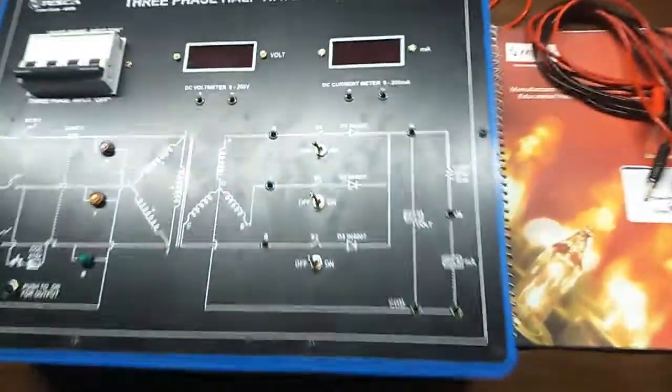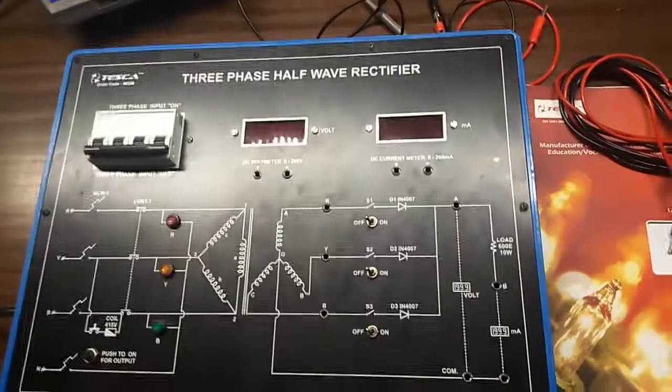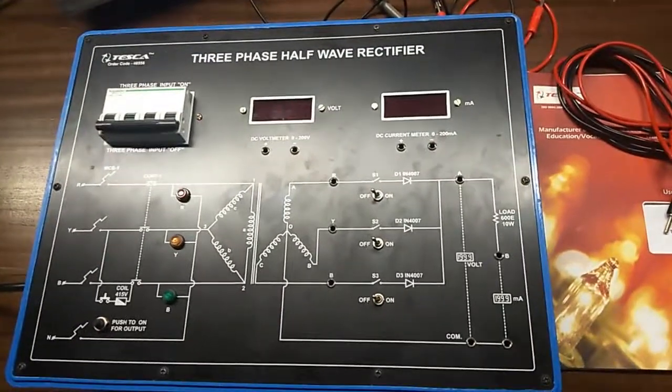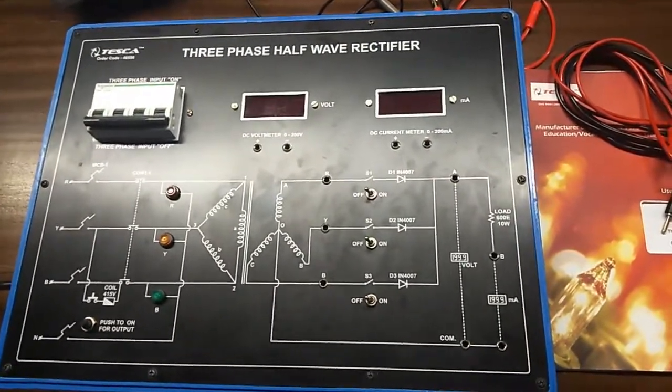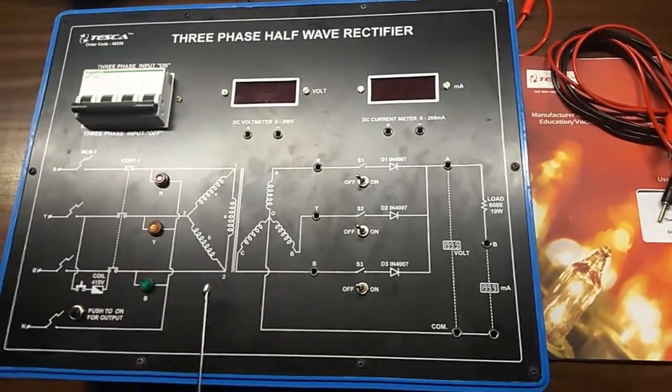Today, we are going to show you our three-phase half-wave rectifier trainer kit, order code 46556. This is the trainer kit.